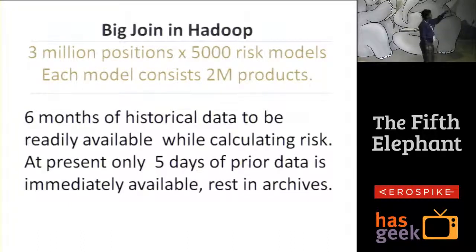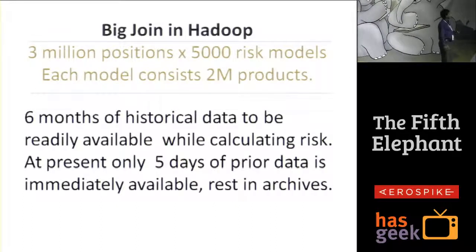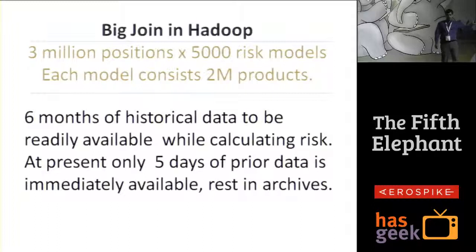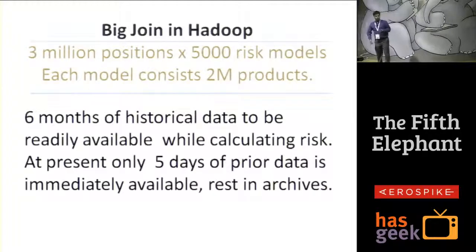On top of that, for each model there are 2 million products to look up. It's a big hashmap and you are doing continuous lookup for each calculation — lookup plus calculation both happening together. We want to do this in real time. The current system only looks back five days, which is not good enough. We want to see six months to understand how the risk model is working. With the current data on tape, there's a process of two to three days to bring it and load it.